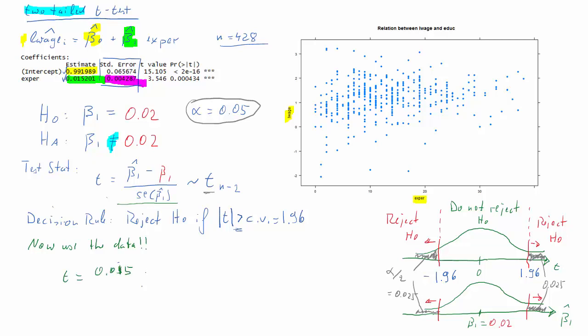So let's calculate our t statistic: 0.015201, that's our beta 1 hat, it comes from the regression output, minus 0.02, that comes from the hypothesis, divided by the standard error of beta 1 hat, 0.004287, that comes from the regression output. Once you calculate that you get a value of negative 1.1194.